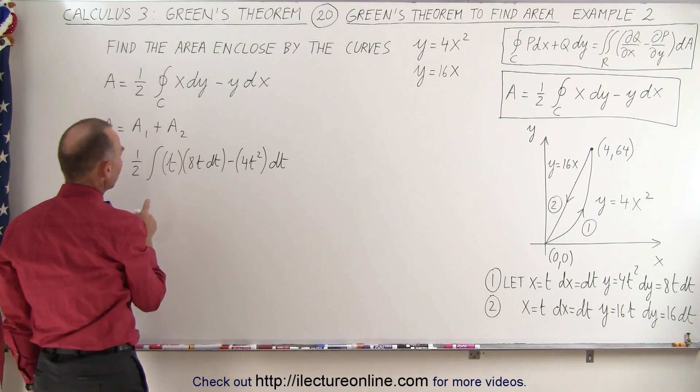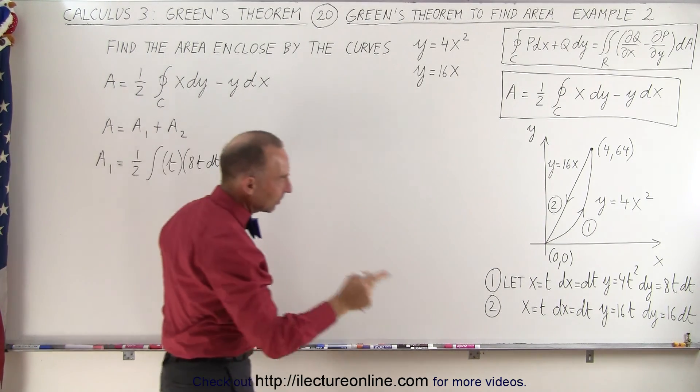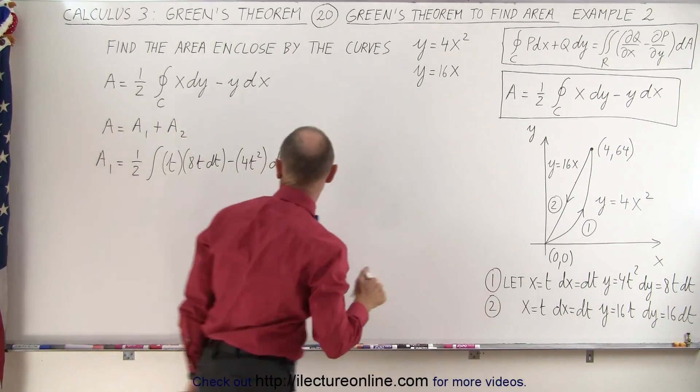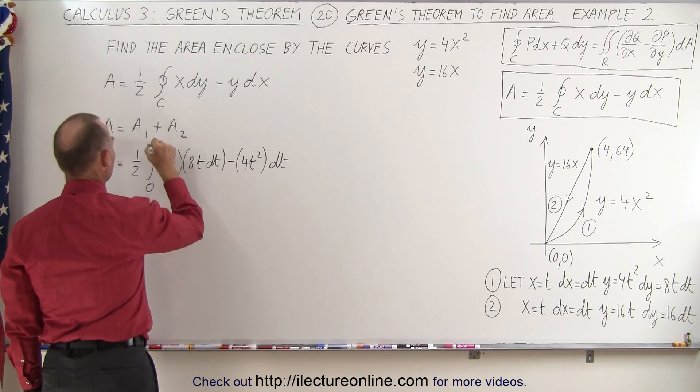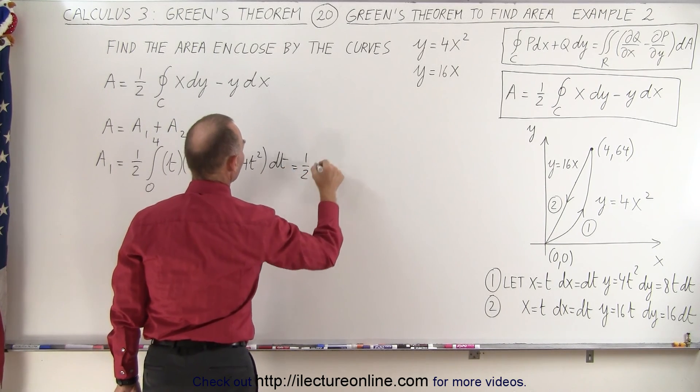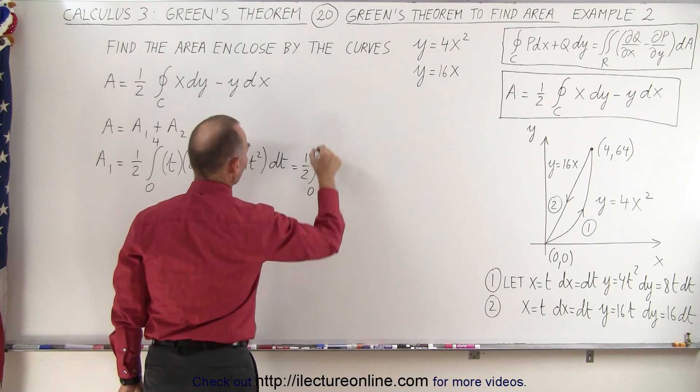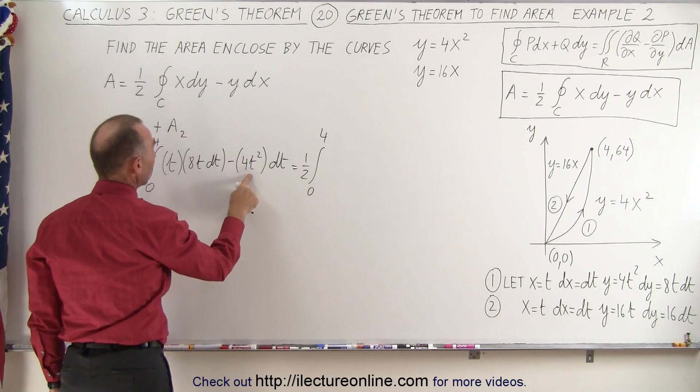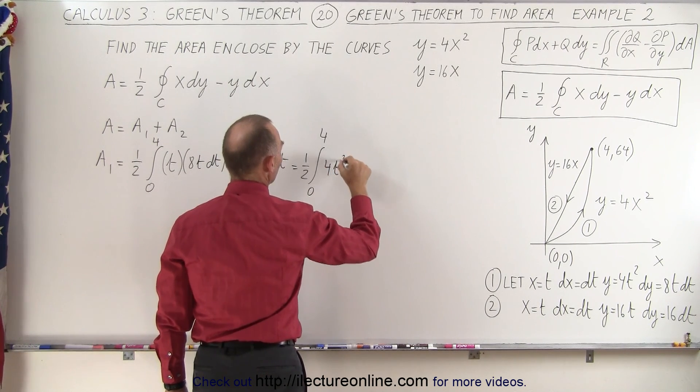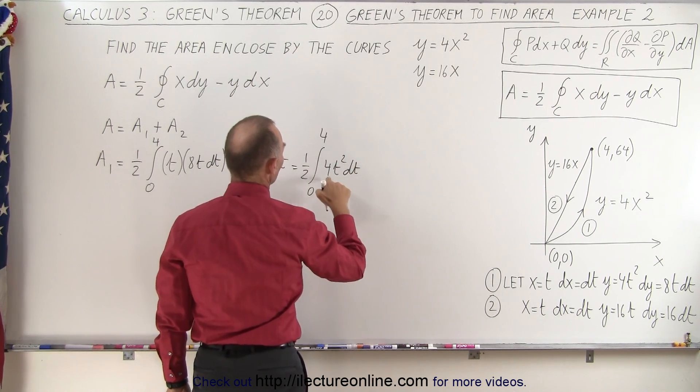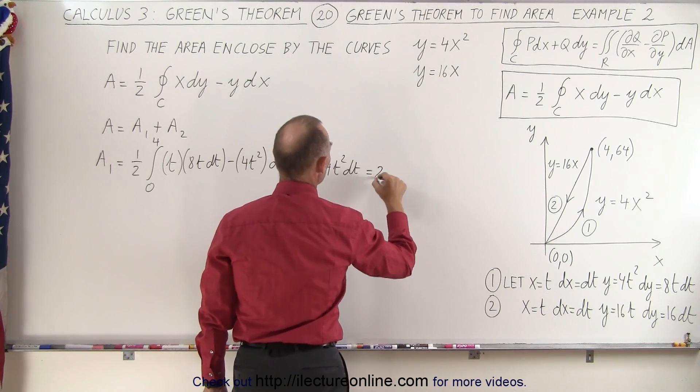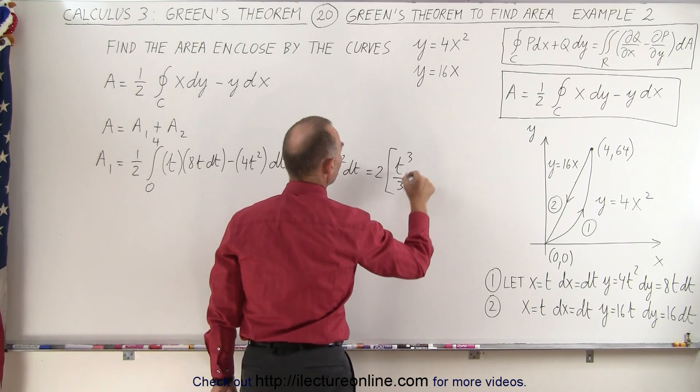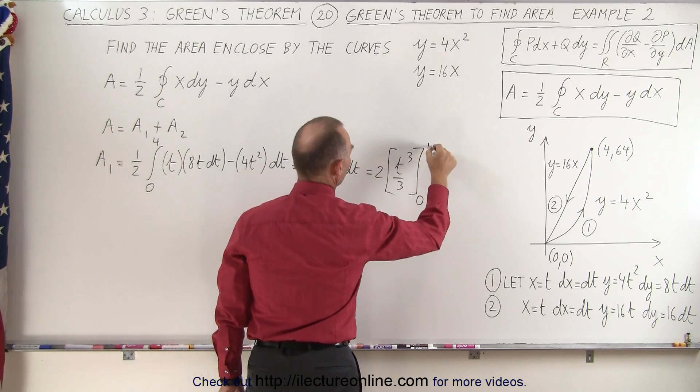And notice the limits of integration are going to be t limits, and since t is equal to x, the limits are going to be from zero to four along the first path. So this is equal to one-half times integral from zero to four. And notice we have an 8t squared minus 4t squared, that would be 4t squared dt. And of course, the fourth times one-half is two. So this is equal to two times, when we integrate t squared, we get t cubed over three, evaluated from zero to four.